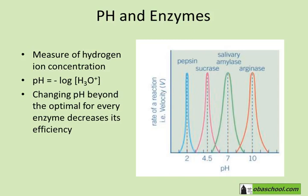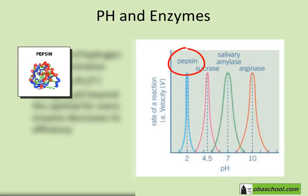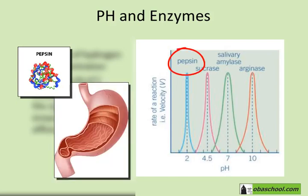Look at this graph, for example. We have four different enzymes, and every one of them has an optimal pH. For example, pepsin, which is an enzyme that works in the stomach — the most acidic organ of the digestive system — logically it's going to have an optimal acidic pH. So its optimal pH here is 2, which is very acidic.